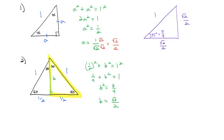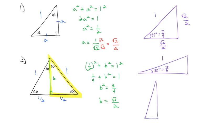Subtracting 1/4 from both sides, b² = 3/4. Taking the square root, b = √3/2. This gives us two more important triangles: a 30-degree angle (π/6 radians) with hypotenuse 1, and a 60-degree angle (π/3 radians) with hypotenuse 1. They're really the same triangle tipped in different directions, with the shorter distance always 1/2 and the longer distance always √3/2.